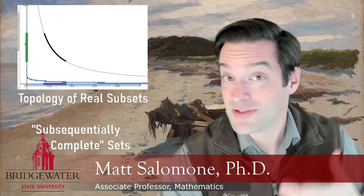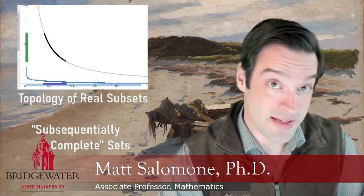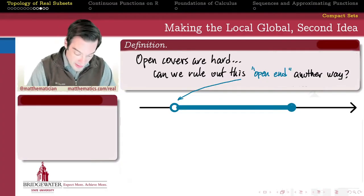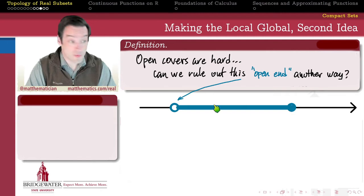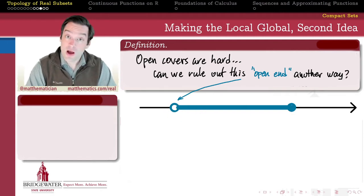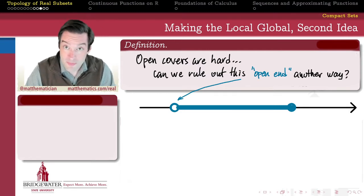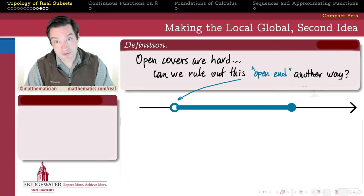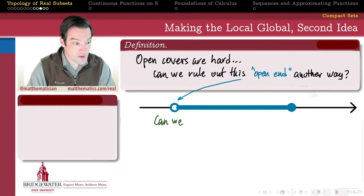In this video, we'll find out that the answer is yes by introducing the notion of what I call a subsequentially complete set. We're looking for a way to rule out the same problem we had with the set from 0 to 1, inclusive of 1 and excluding 0 — where that open end caused the problem in our local-to-global heartbreak for the boundedness of f(x) = 1/x. But if we don't want to use open covers and sub-covers to rule out this open end, is there a different way we can do it?